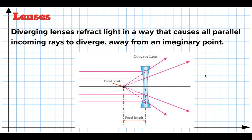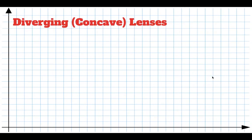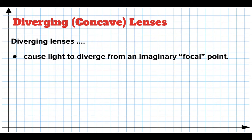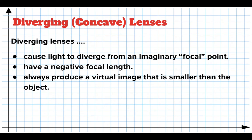Diverging lenses can form images, but they are always virtual images. Some properties of concave or diverging lenses: first, they cause light to diverge from an imaginary focal point. The distance this focal point is located from the lens is called the focal length. The focal length is always negative, so when solving problems algebraically you have to use a negative value. And diverging lenses always produce virtual images that are always smaller than the original objects.